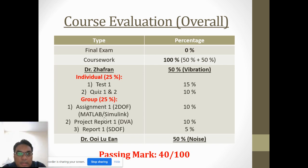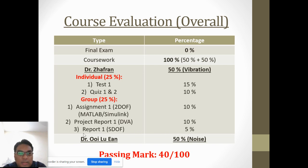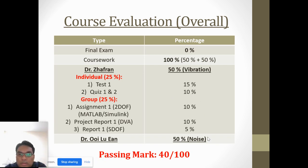For the group component - 25% - you will have assignment number one on course outcome number two, where you need to generate the response of a 2-degree of freedom system using MATLAB and Simulink software. The second group task is the DVA project report at 10%, and the final one is a literature report on the single degree of freedom system at 5%. Each course outcome has a corresponding group assignment, totaling a maximum of 50%.